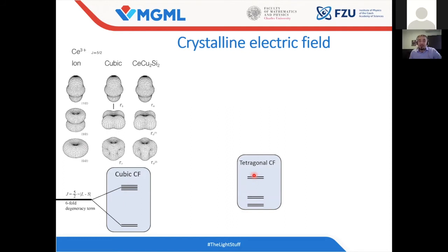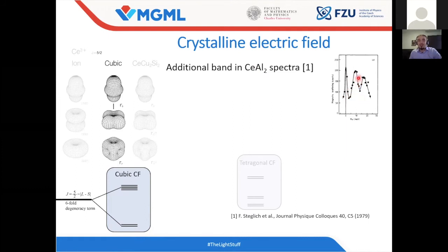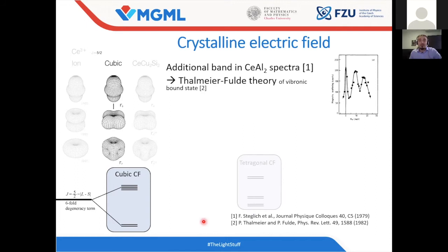One doublet will have the lowest energy — the ground state — and then a first and second excited doublet. This was all known and people were measuring it about 40 years ago on many compounds, one of which was CeAl₂. CeAl₂ is a cubic compound, so according to the cheat sheet, the crystalline electric field should have two levels: one ground state and one excited state. If you put this in a neutron beam, you should detect one excitation from the ground state to the first excited state — a very simple system. It was measured, but look: there are two peaks, which is not consistent with this theory.